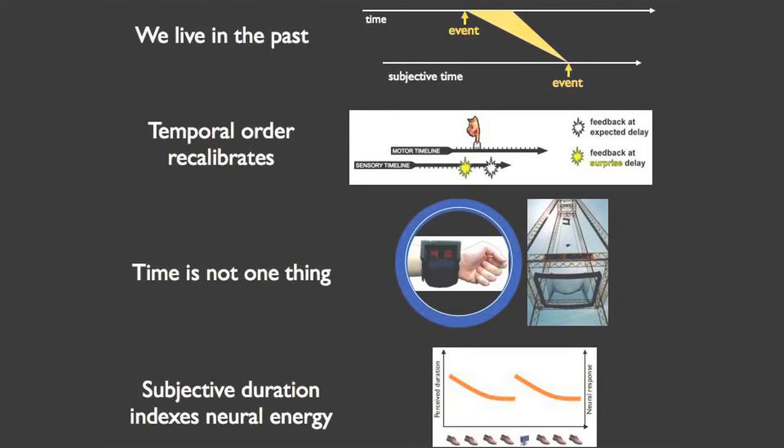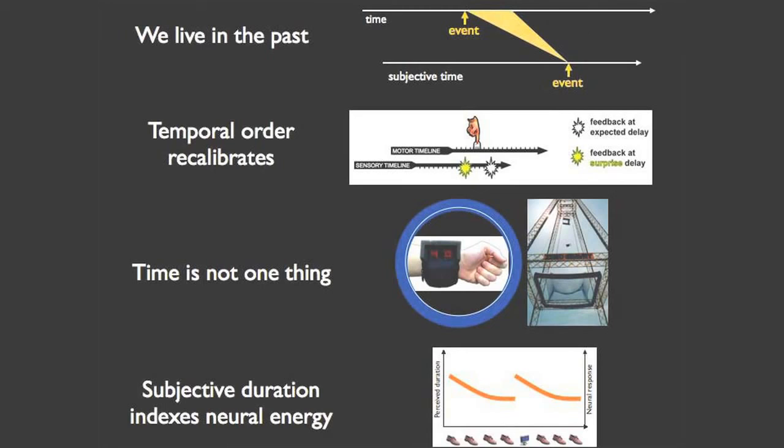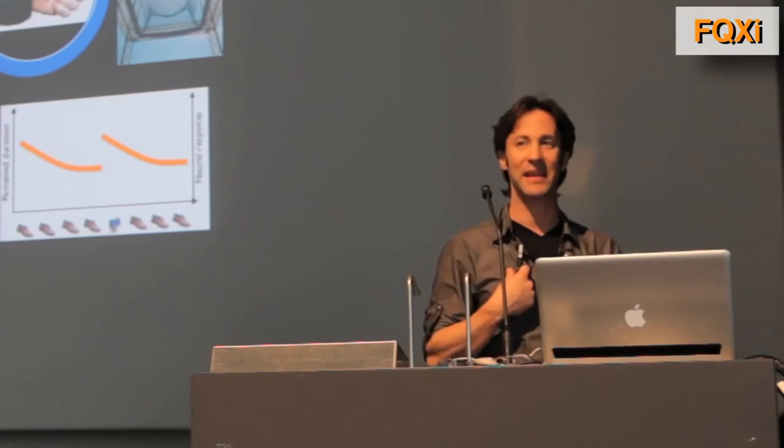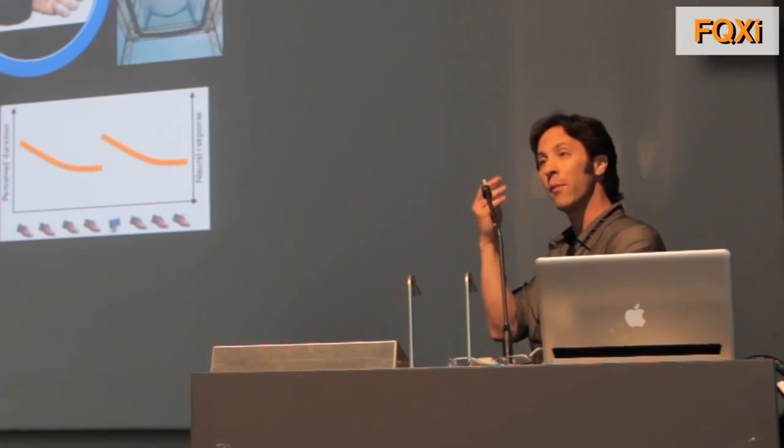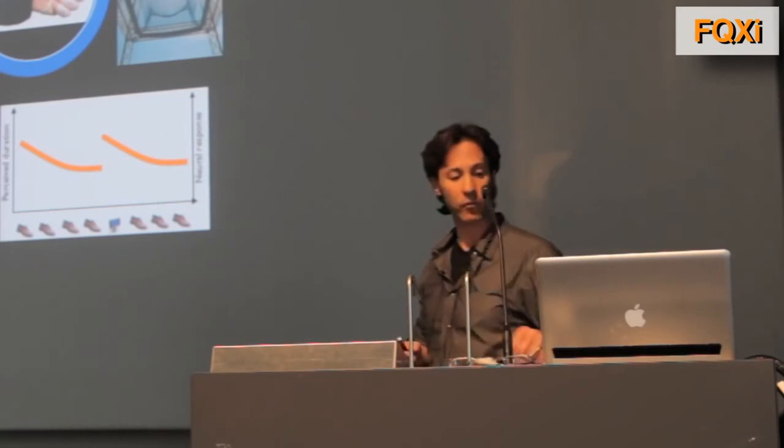Just to summarize the four surprises: First, we live in the past and information slightly in the future of an event can influence what you think you see at the time of the event. Temporal order recalibrates dynamically and it only takes several seconds for you to start readjusting your timing such that we can cause an illusory reversal of action and effect by suddenly removing the delay and then you think something happened before you even did it. Time is not one thing because we can find lots of situations where we make you believe that a duration was much longer or shorter and that doesn't change the other things you think might be entailed by that. And finally, this very wacky hypothesis that just seems to map with all the data right now, which is that subjective duration, how long you feel something lasted, seems to be an index of how much your brain had to work to represent that object.